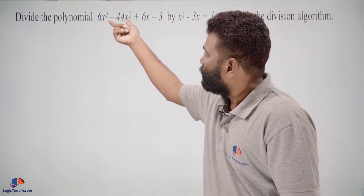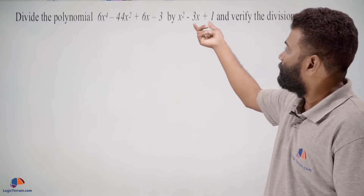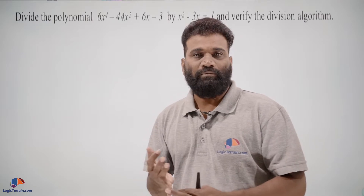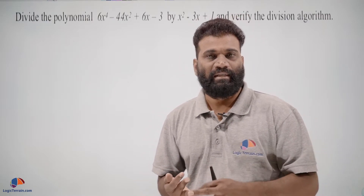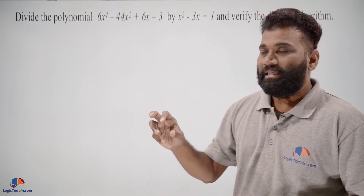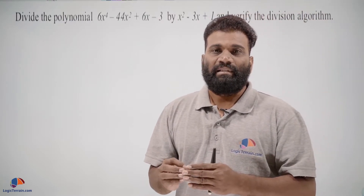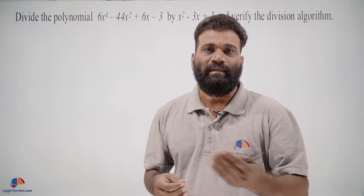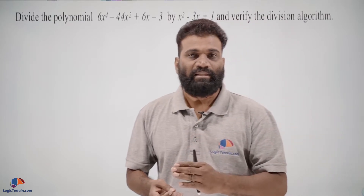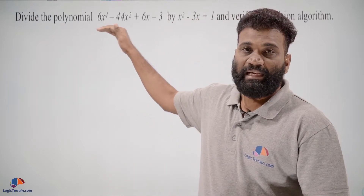We have been given a fourth-degree polynomial which we have to divide by a quadratic polynomial. After dividing, you will get some quotient and remainder — sometimes the remainder will be zero, sometimes you will be left with some remainder. Once we get that, we need to verify the division algorithm, which tells us whether our division is correct. The division algorithm states: dividend equals divisor into quotient plus remainder.